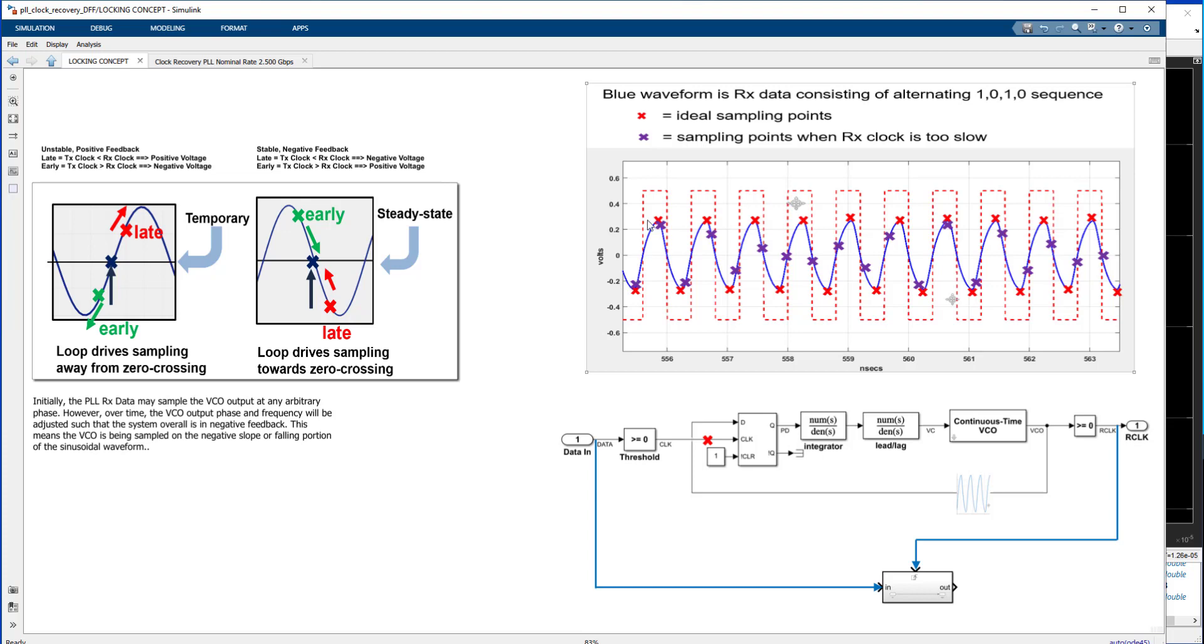So ideally, in the receiver, we want to sample the data that we're receiving, this hypothetical test waveform of ones and zeros, near the peak. That will give us the most robustness against noise, the best signal-to-noise ratio, the most robustness against crosstalk, and also jitter.